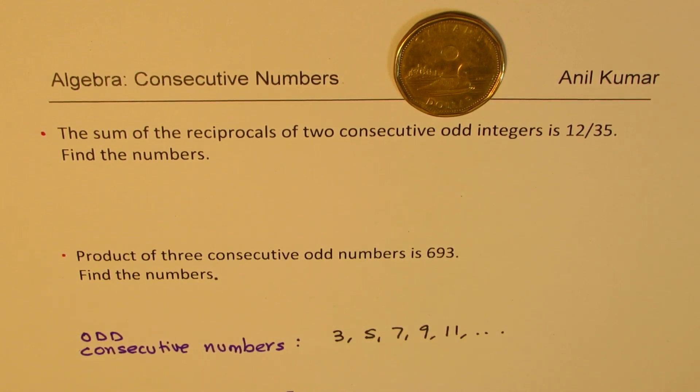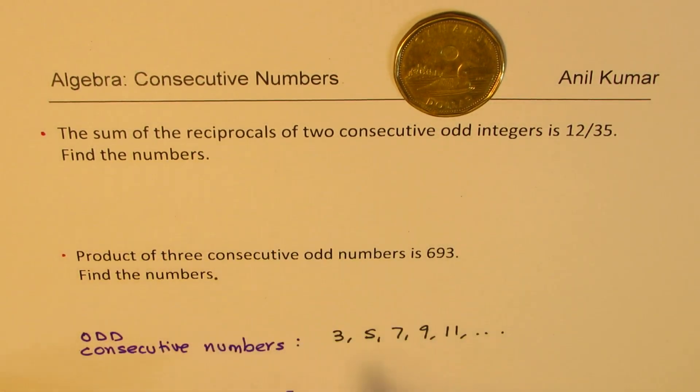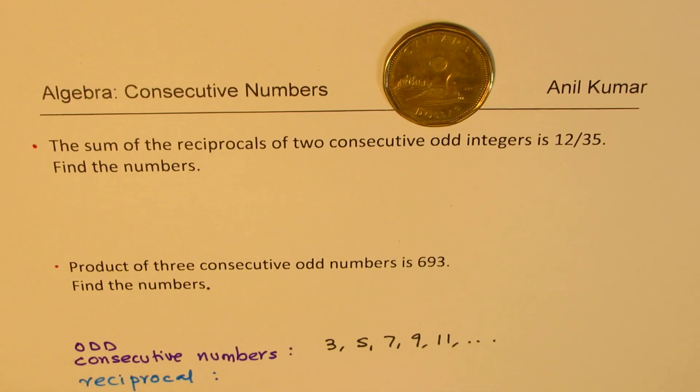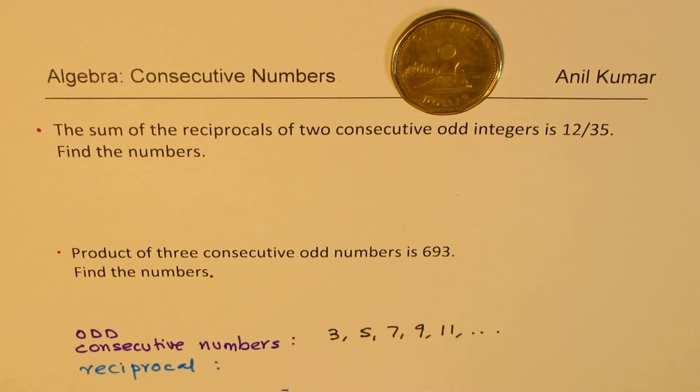Another term which you might like to understand is what reciprocal. So the meaning of reciprocal is... If we have a number x, then the reciprocal is 1 over x. So these are reciprocal numbers.